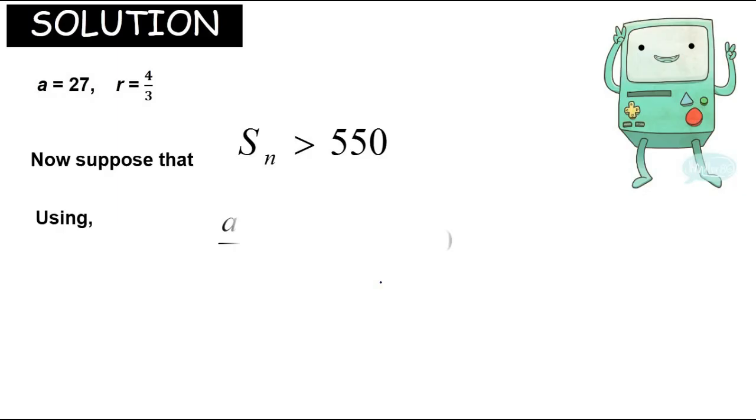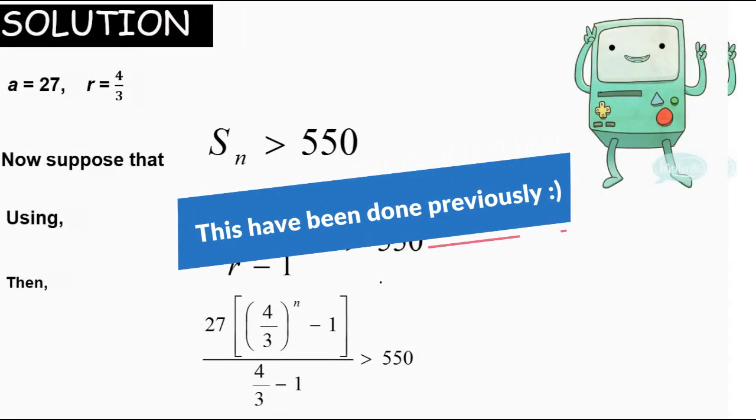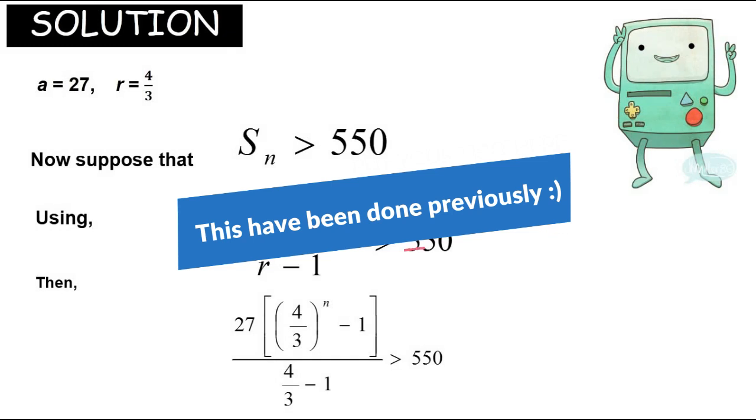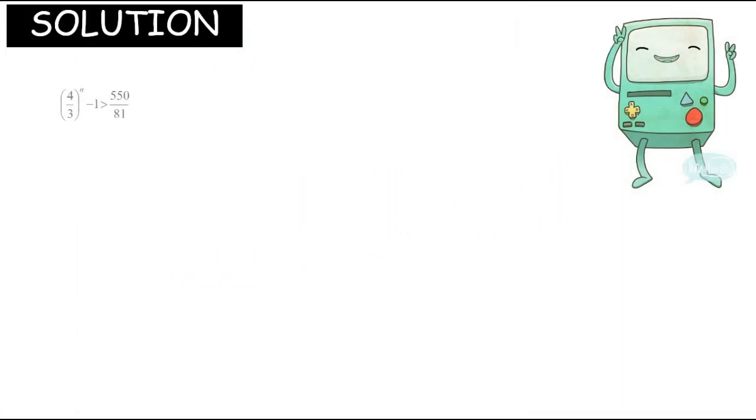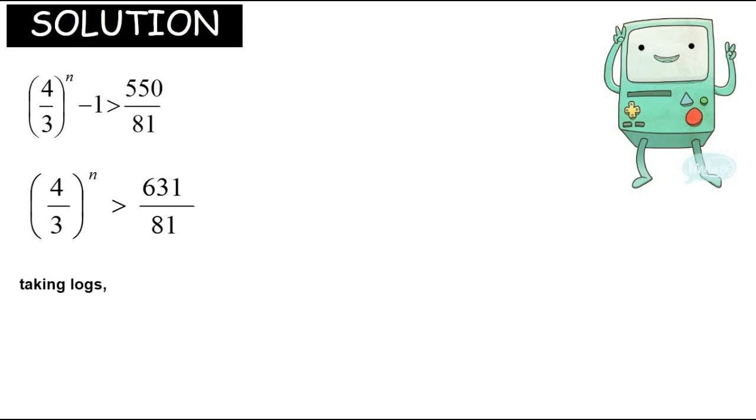Now simplify all the things outside the bracket first. So we have this one - simplifying outside the bracket first means it's becoming 550 over 81 and then plus with 1.